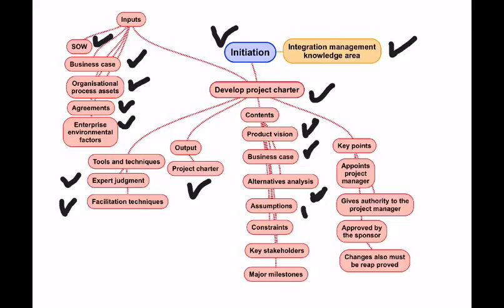In the Charter, we document the assumptions we make — like expert manpower being available or the assumed climatic conditions. The constraints of time, cost, and scope, and any other constraints, also get into the Charter. The key stakeholders — their names, roles, and contact details — everything gets into the Charter, along with the major milestones with dates.